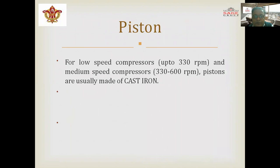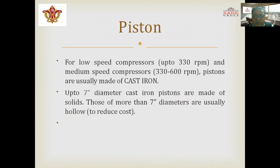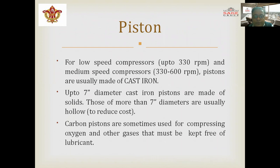For low-speed compressors up to 330 RPM and medium-speed compressors from 330 to 600 RPM, pistons are usually made of cast iron up to seven inches in diameter. Carbon pistons are sometimes used for compressing oxygen and other gases that must be free of lubricant.